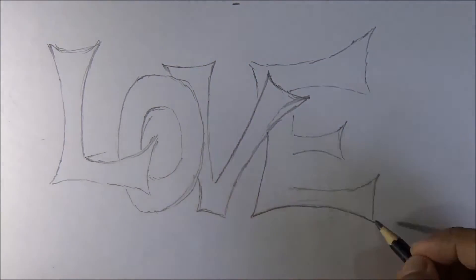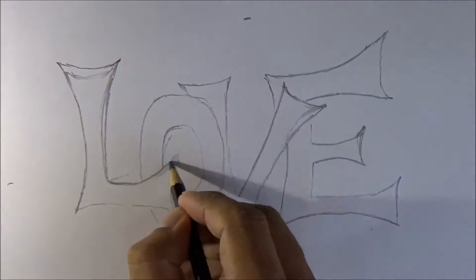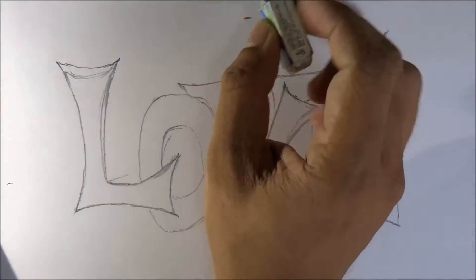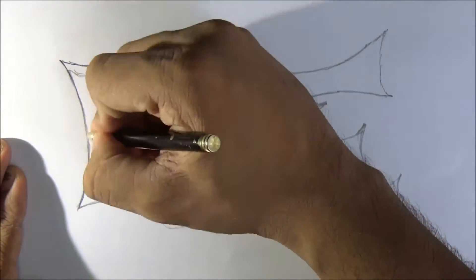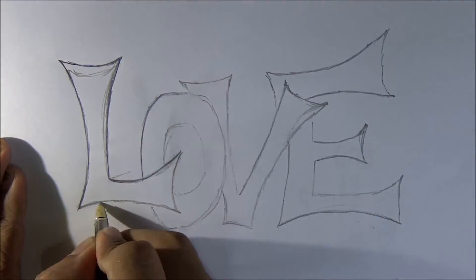You can see V getting overlapped over E. So that's our graffiti letters. What we're doing is cutting this L-O-V-E from the paper, then using another paper behind it and starting to color it to give it a unique and beautiful solid texture in 3D.